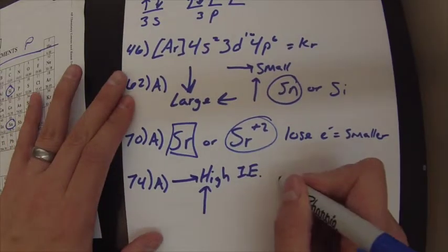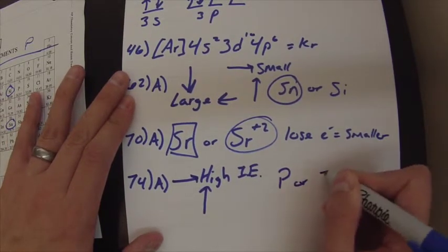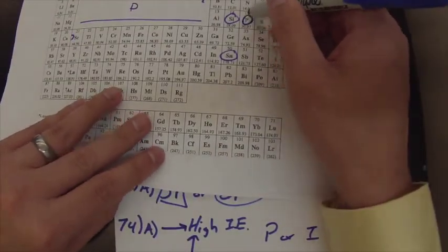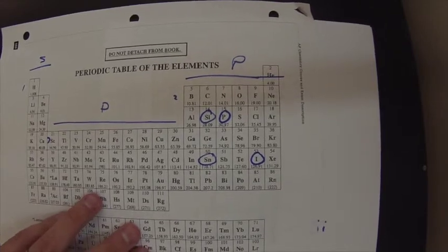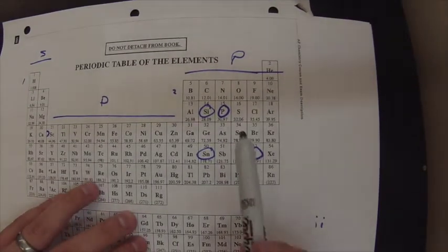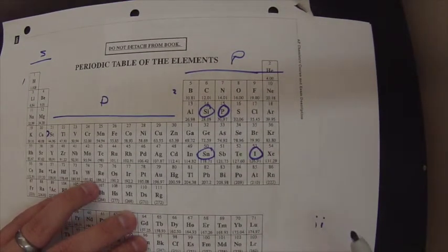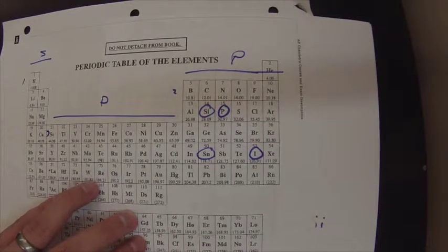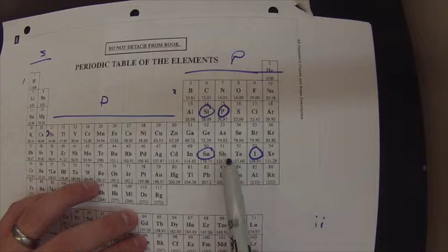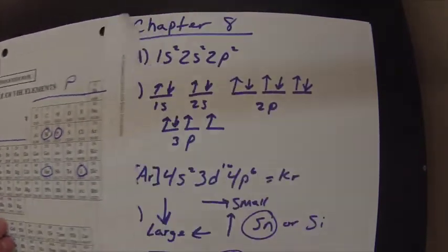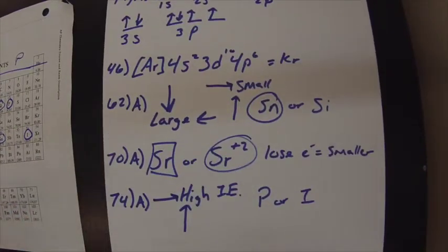So for 74, it's talking about phosphorus or iodine. So if we look here, there's phosphorus and there's iodine. So we go to the right to get from phosphorus to iodine. So that's going to increase our ionization energy. But then we go down, which is going to decrease our ionization energy.